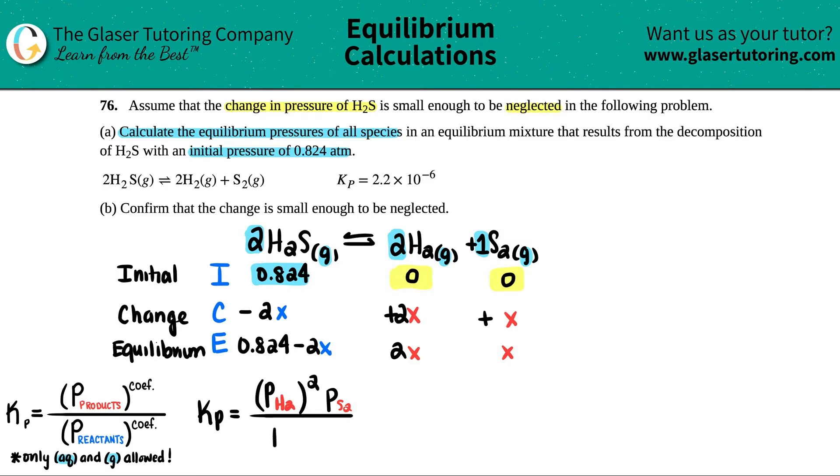Then let's do the bottom. This would be the pressure of H2S. And there's a coefficient here. There's a 2. So I have to raise this to the second. Now we know all of the values, right? The H2 was a 2X. The S2 was an X. The H2S was 0.824 minus 2X. But here's the thing, guys.